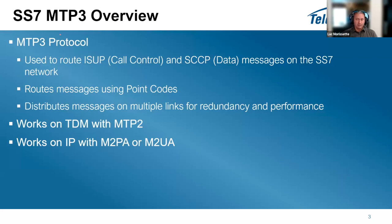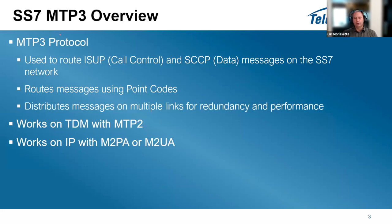We can compare a point code to an IP address - in an SS7 network it works the same way as an IP address does in an IP network. You send a packet using a specific point code just as you send with an IP address to reach your destination; both are layer three in the architecture. MTP3 also distributes messages on multiple links, so if you have multiple links going to a destination it can send traffic on any one of them - either for redundancy if you lose a link, or for performance to distribute high traffic volumes across multiple links to reach capacity.